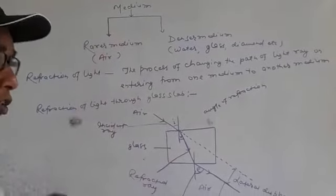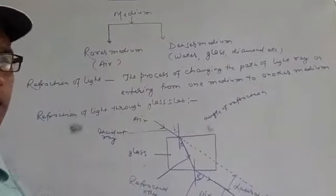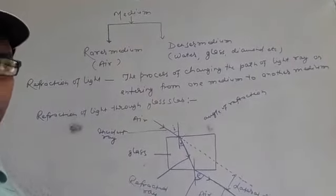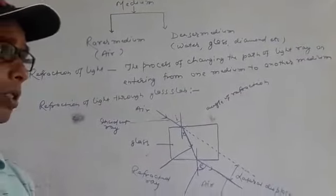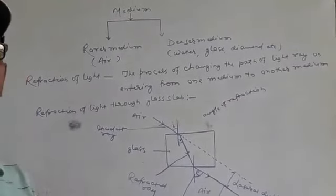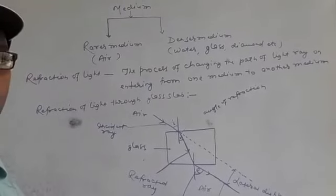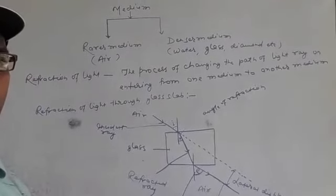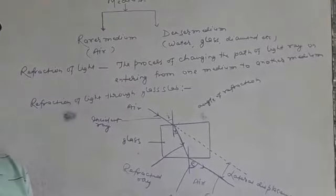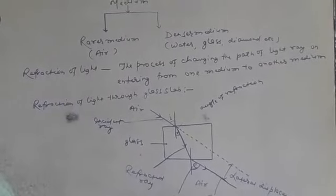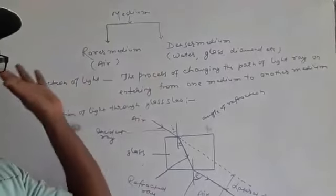You know from very beginning about medium — medium for the sun and in our surroundings. English medium, Hindi medium, Oriya medium, Bangla medium — this is medium for language, but here we are talking about medium for light.